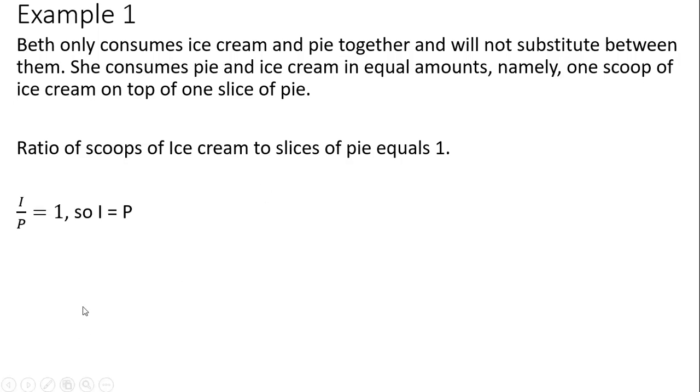We can construct the ratio mathematically. Here I is ice cream and P is slices of pie, and given the information from our word problem, this ratio is just 1.